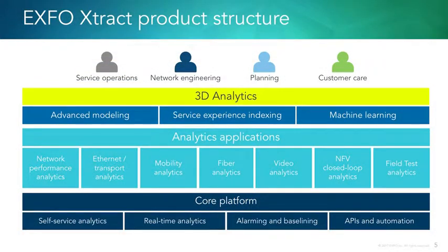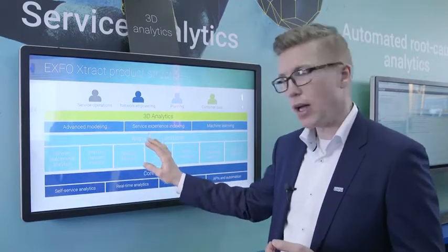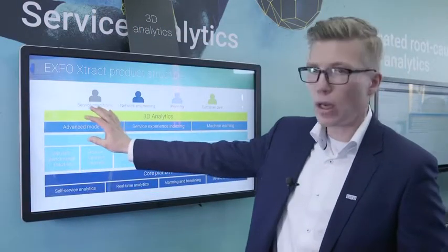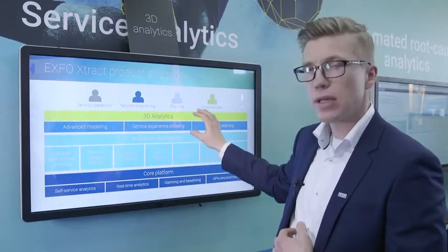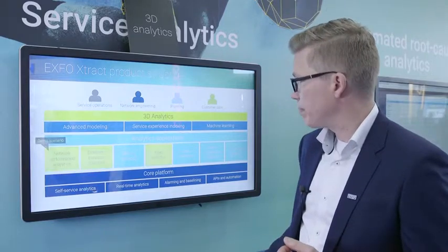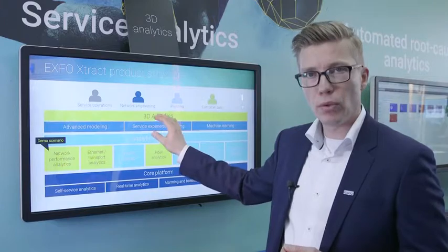Starting from the left, we have network performance analytics for managing data from IP layer 3. We have Ethernet and transport analytics mainly designed on top of our active probes. We have mobility analytics based on passive probing, fiber analytics collecting data from XFOs and the NQMS fiber network monitoring solution, video analytics, an application for NFV closed-loop analytics, and finally field test analytics for portable XFO devices. These individual analytics applications are combined on a top layer called 3D analytics, where we take data from multiple analytics applications and combine it together. In my demo setup I have three analytics applications: network performance analytics, Ethernet and transport analytics, and fiber analytics, using the 3D analytics layer to display and visualize the data.